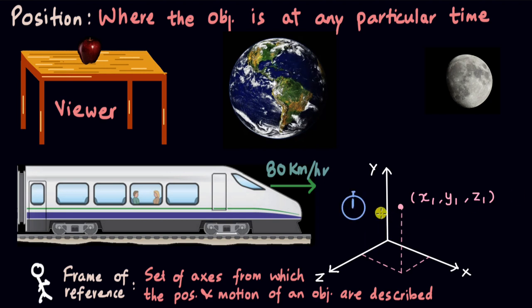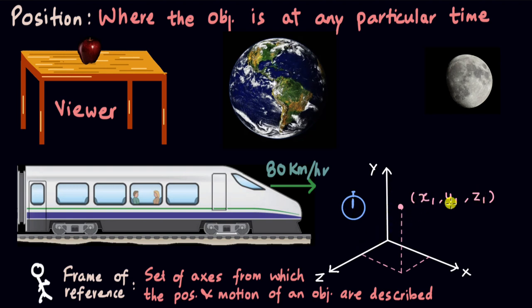We can add a clock to measure time into this frame of reference. If these three coordinates remain unchanged as time passes, then we can say that the particle is at rest with respect to this frame. But if any or all of the coordinates change with time, then we say that the body is moving with respect to this frame.